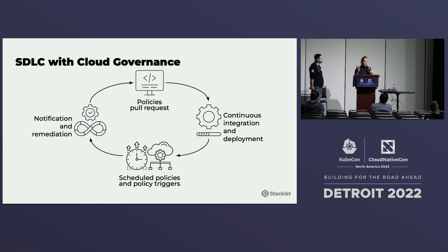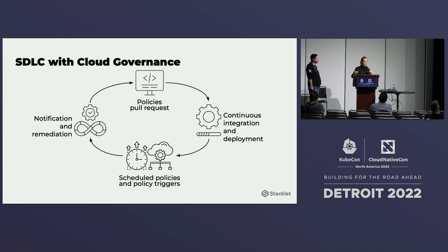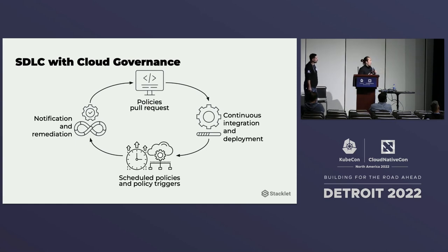A quick rundown on the software development lifecycle for policies: you can keep all your policies in a Git repo and run CI on that — typically running the policy in a dry-run mode against your resources, then deploying them. You can have scheduled policies with periodic modes or a cron job, as well as automated policy triggers, then send notifications and perform remediations.